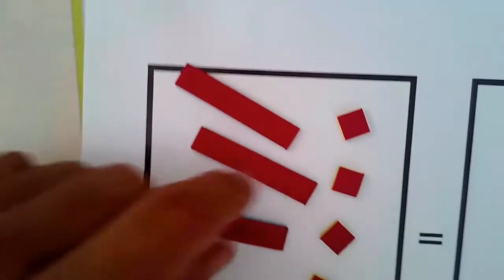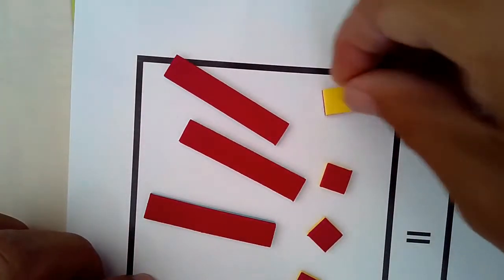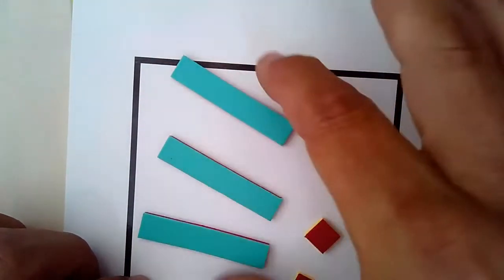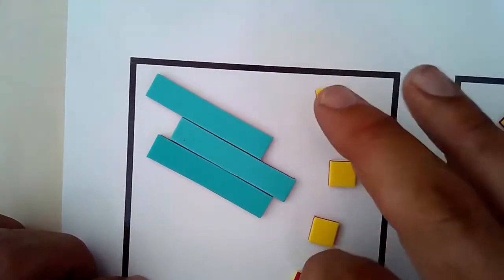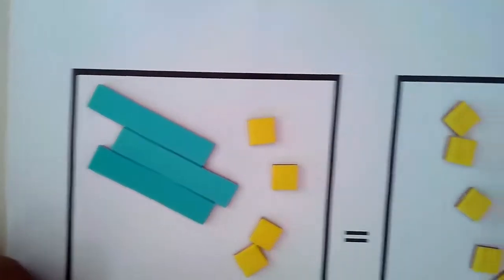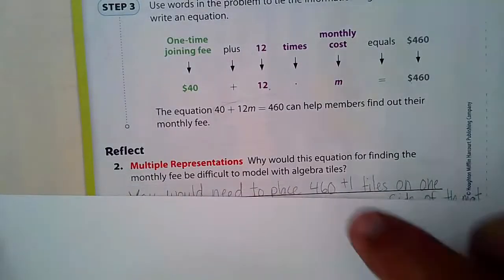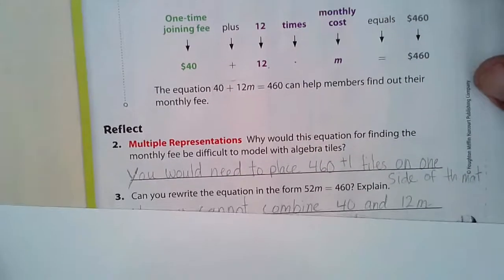Plus 40. I'd have to have 40 of these, and they need to be adding. So I'd have to have 12 of these, 40 of these, and then I'd have to have 460 of these on the other side, because that was 460. That's kind of crazy.